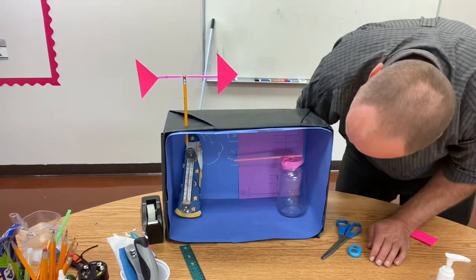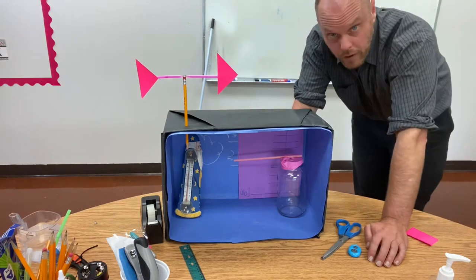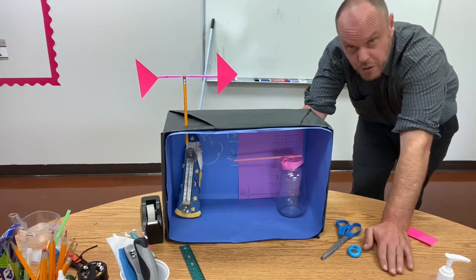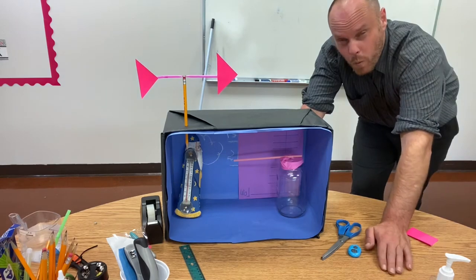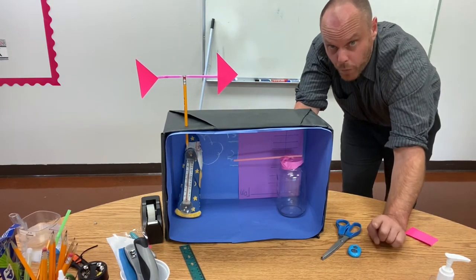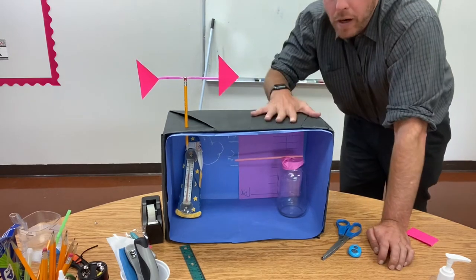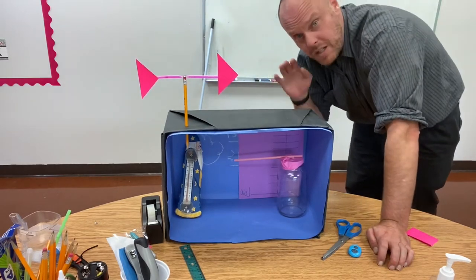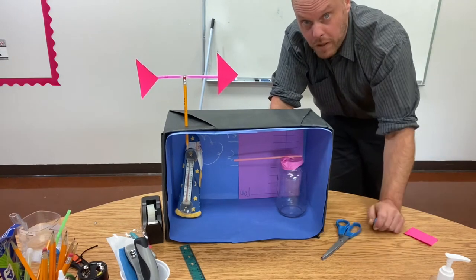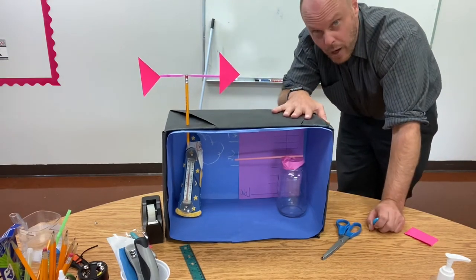If you take a look right there, you will see that our barometer is pointing towards the low. Just seeing that, we can tell what kind of weather we're going to have. Because we're having low air pressure, we know that we're going to be getting storms soon. And if you've been watching the weather, you know this to be true. Here in our weather station, we can actually predict what the weather is going to be just by creating our barometer.